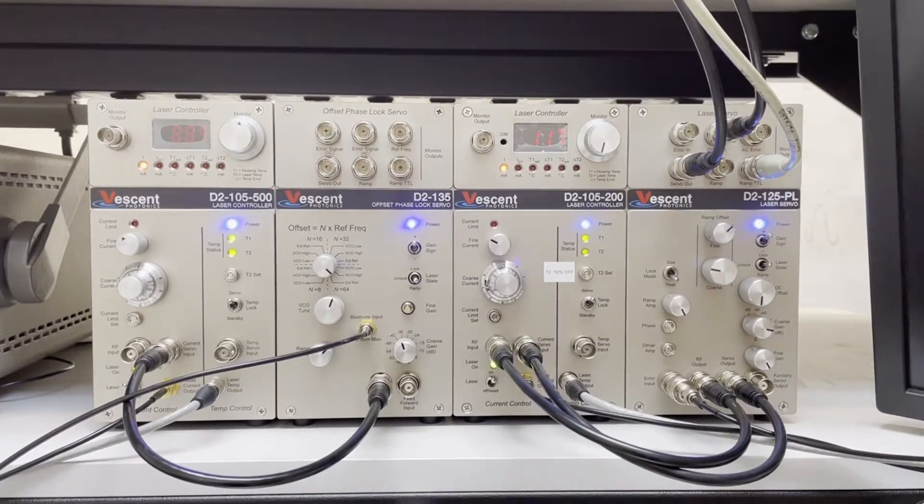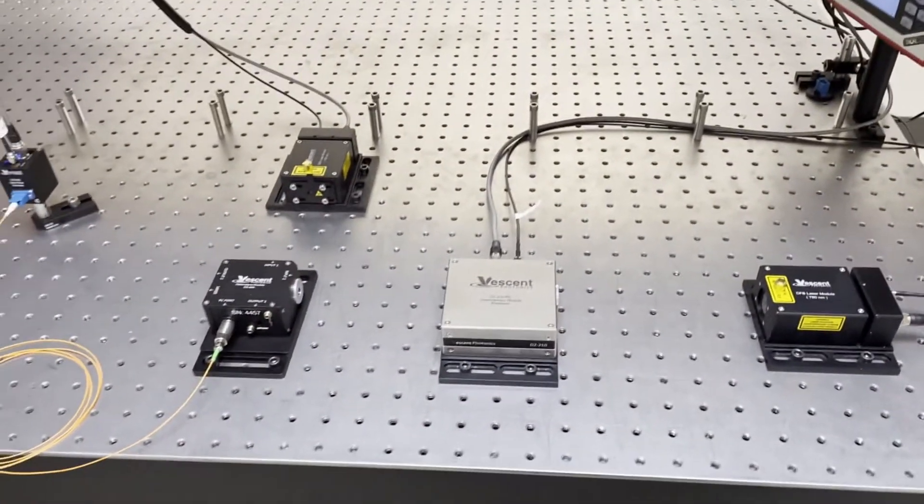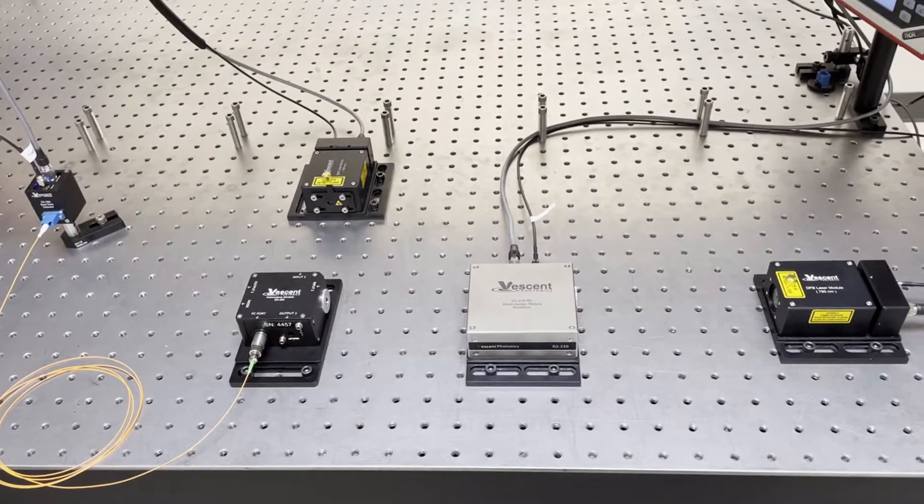As you can see here, my electronics are already set up. If we take a look down at the table, you can see that we have two D2-100 DBR lasers.